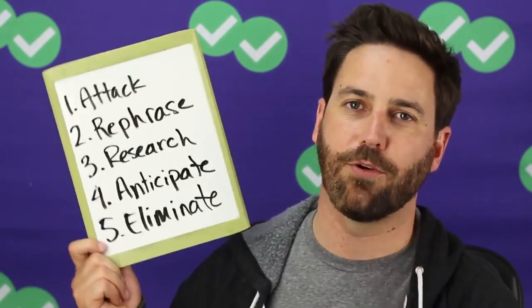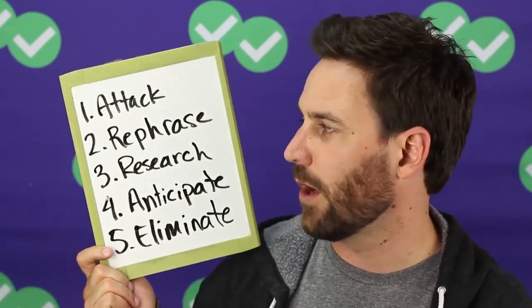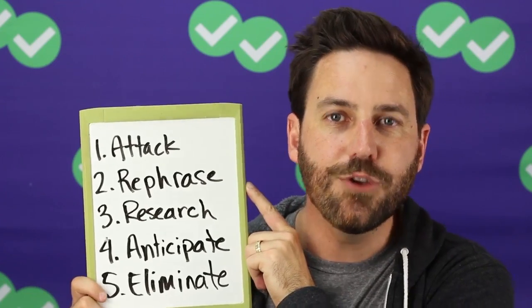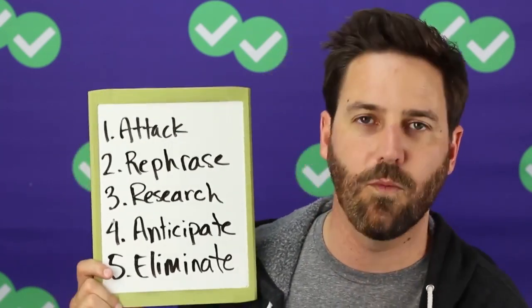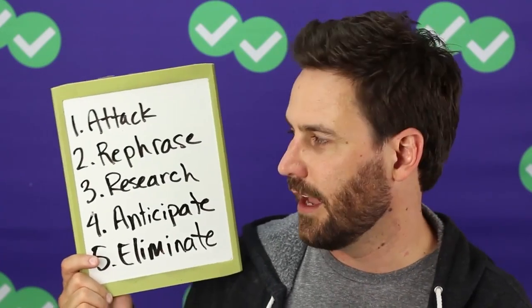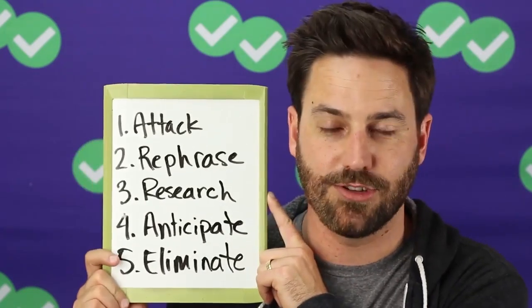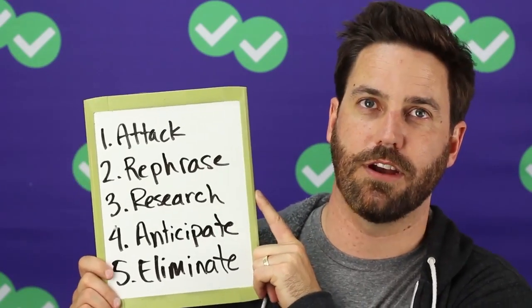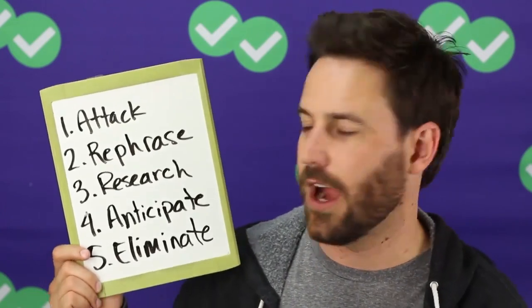Now that I know I'm dealing with a detail question, I know my approach. We've already attacked the passage, so we can rephrase the question. They're asking about the confusion effect and want to know what advantage it gives a school of fish — what theory B says the advantage is. I would do some research in the passage, focusing on the fourth paragraph, where two benefits of the confusion effect are described.